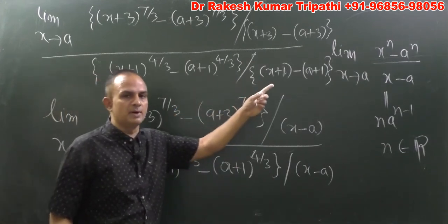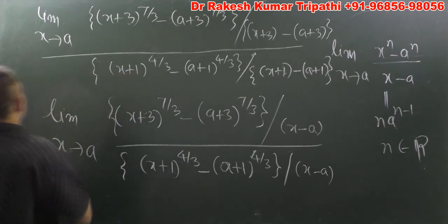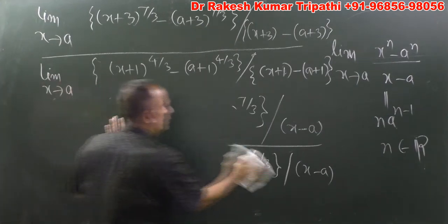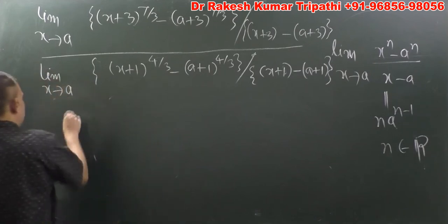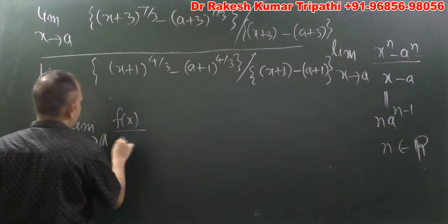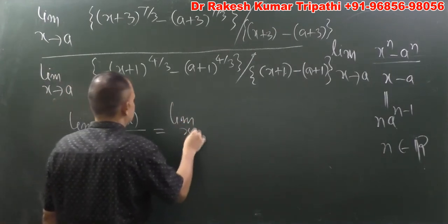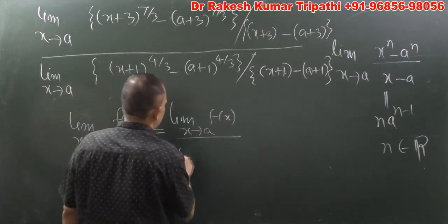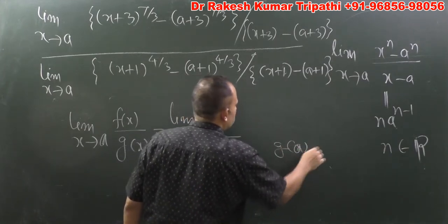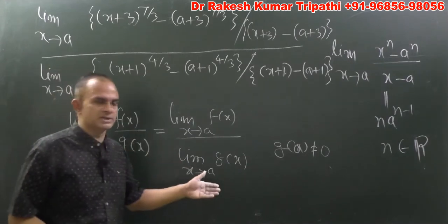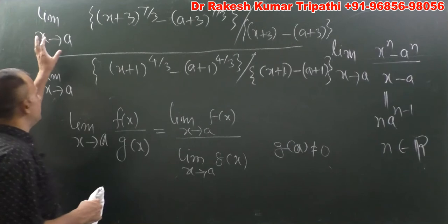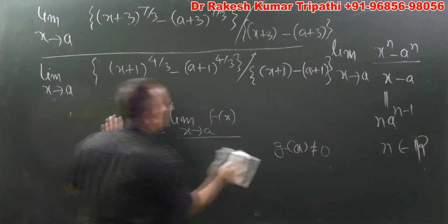We can separate the limits of numerator and denominator because we have a very important result: limit x tends to a of f(x)/g(x) equals [limit x tends to a of f(x)] divided by [limit x tends to a of g(x)], provided g(a) is not equal to 0. If g(a) is 0, this result is not applicable. So we can separate the limits of numerator and denominator.